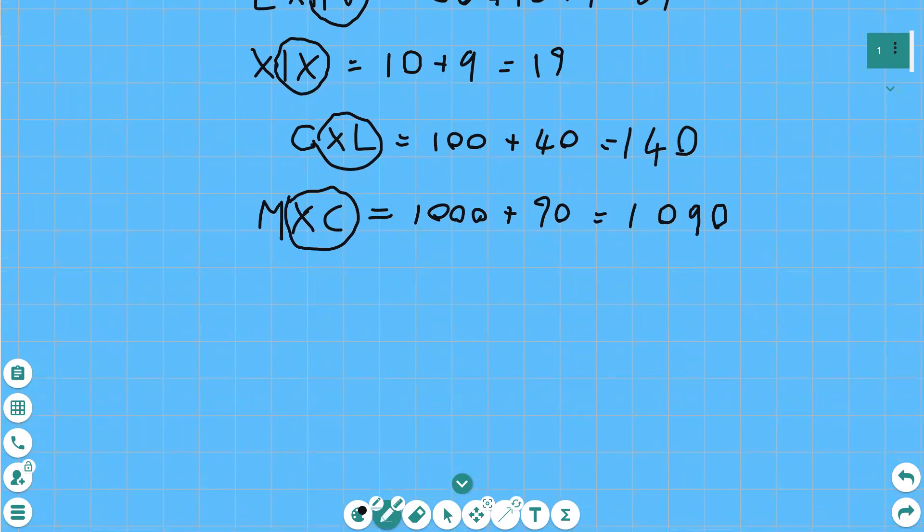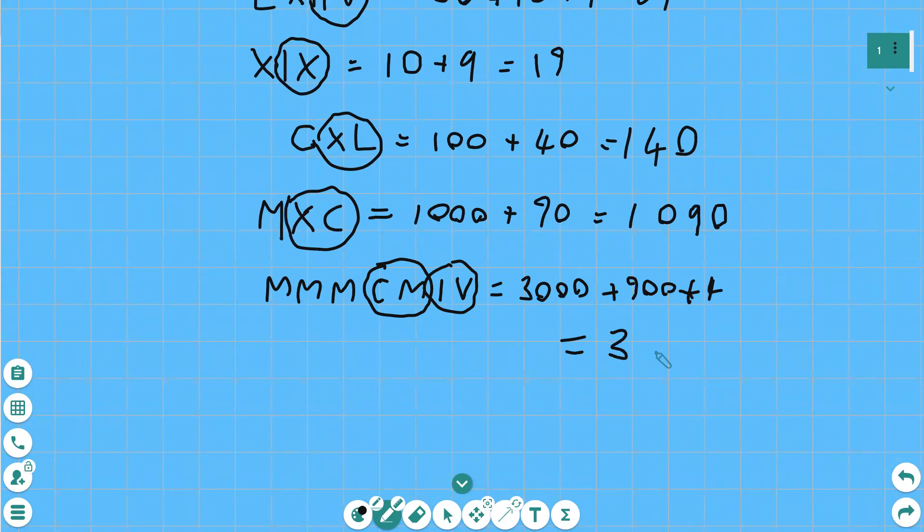So here we have MMMCMIV. Well MMM is going to be 3,000 isn't it? And then CMR. C is 100 which is less than M 1,000. So this must be 900. And then we've got IV. Well 1 is less than V5. So that must be 4. Which equals 3,000, 900 and 4, 3,904.